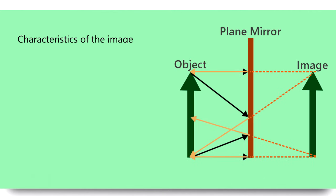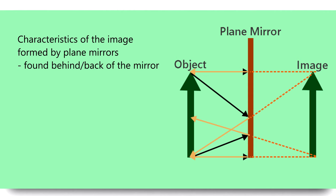What are the characteristics of the image formed by plane mirrors, and where is the image located? The image is found behind or at the back of the mirror. The orientation of the image is the same as that of the object — meaning if the object is upright, the image is also upright.